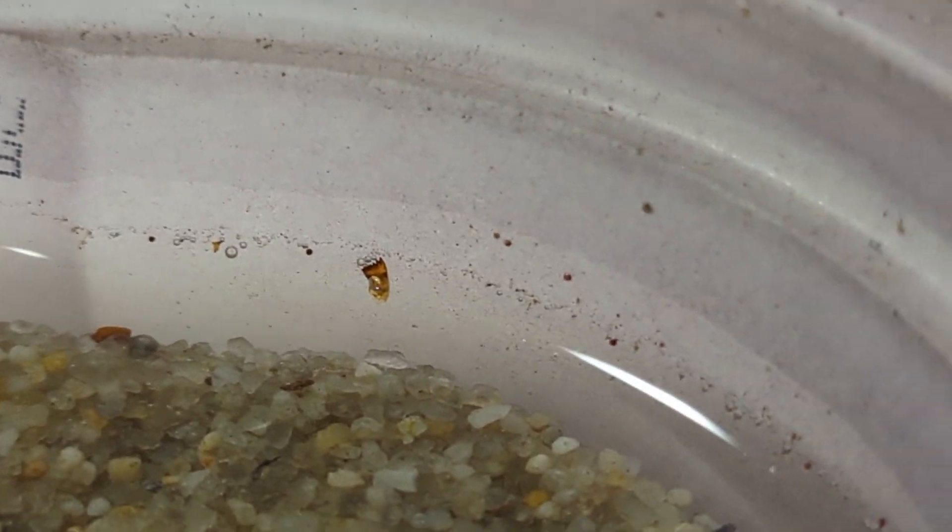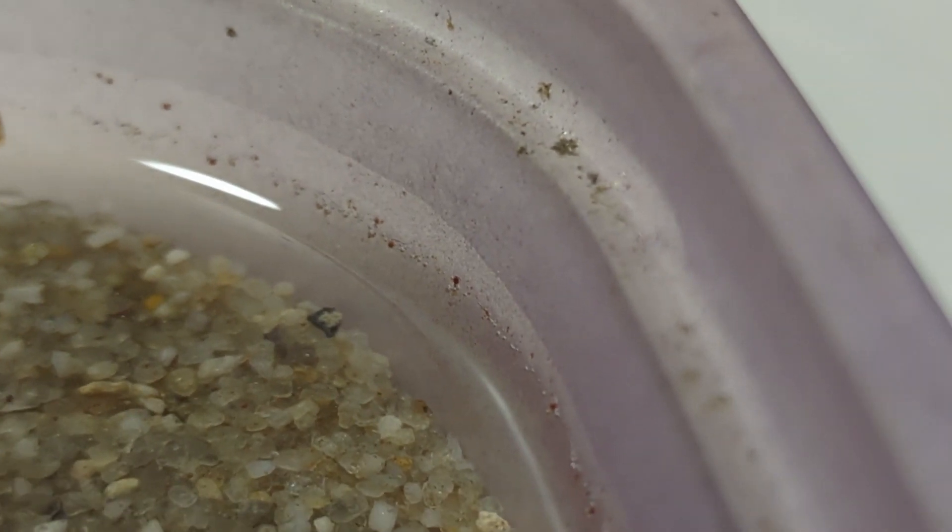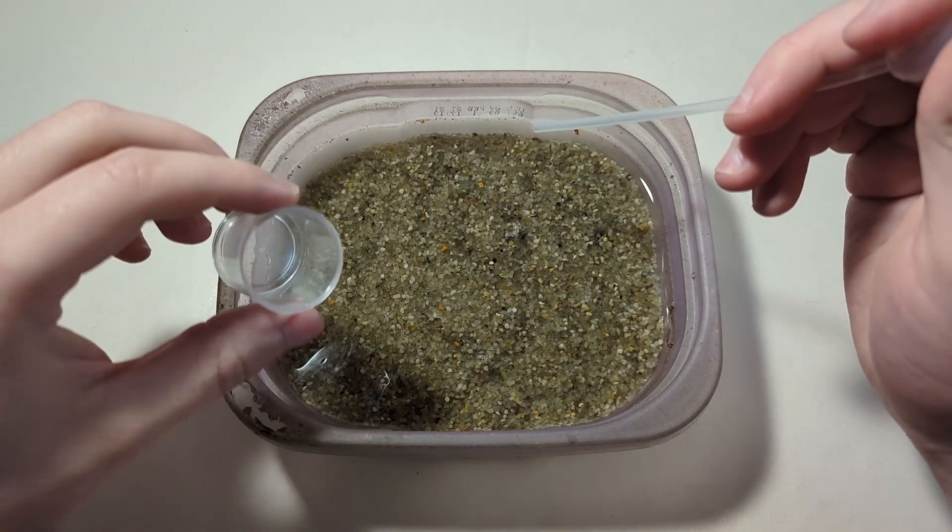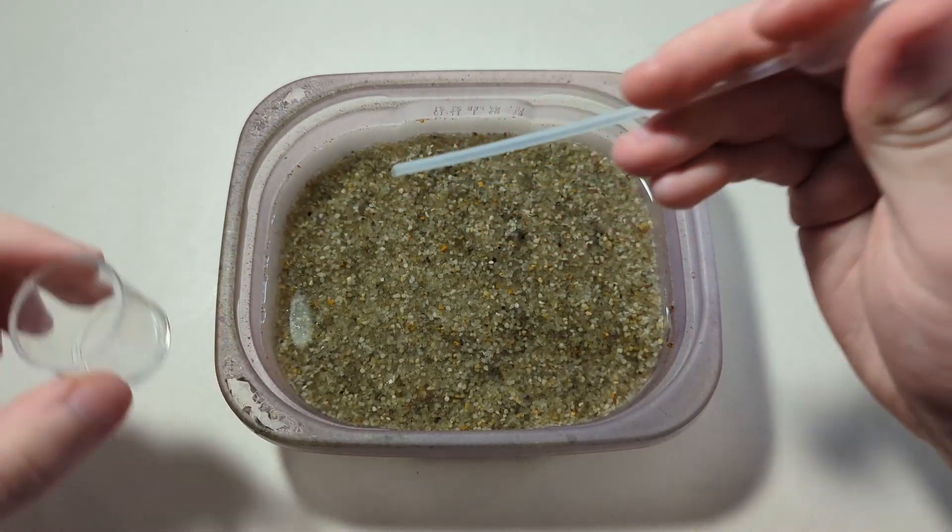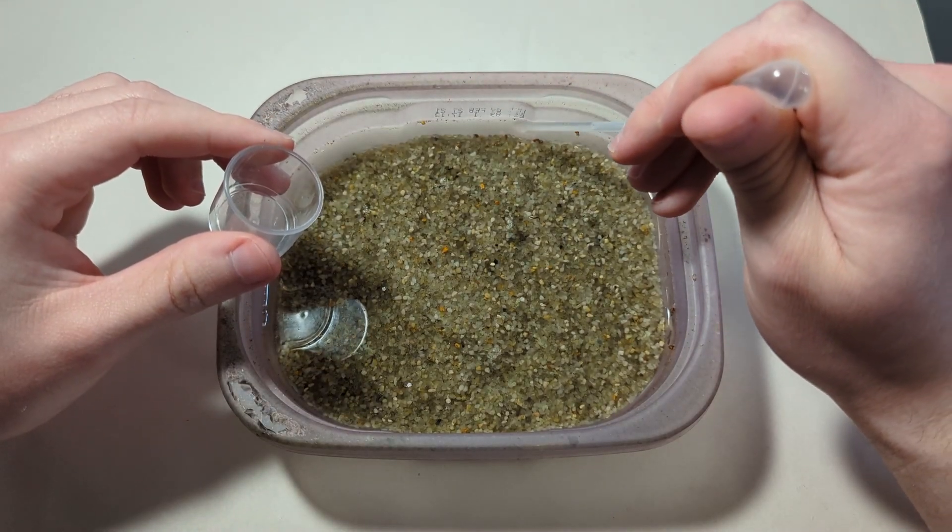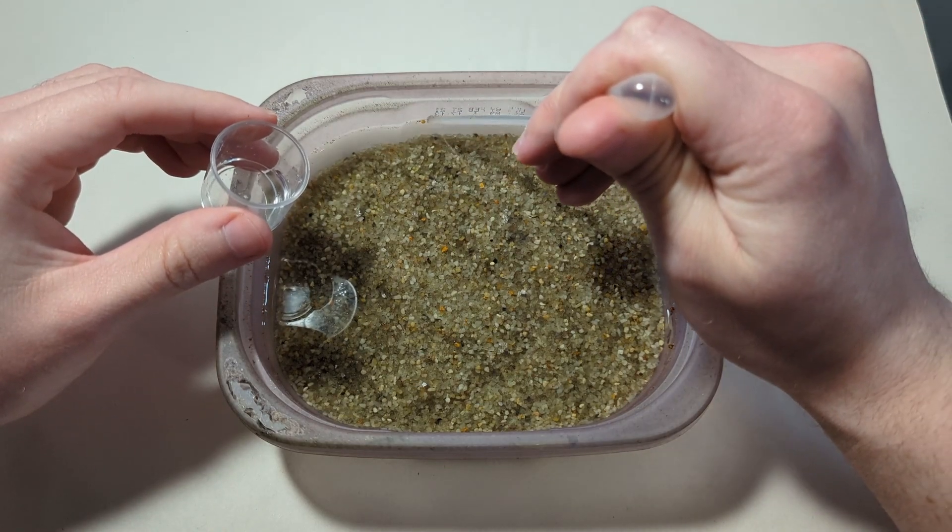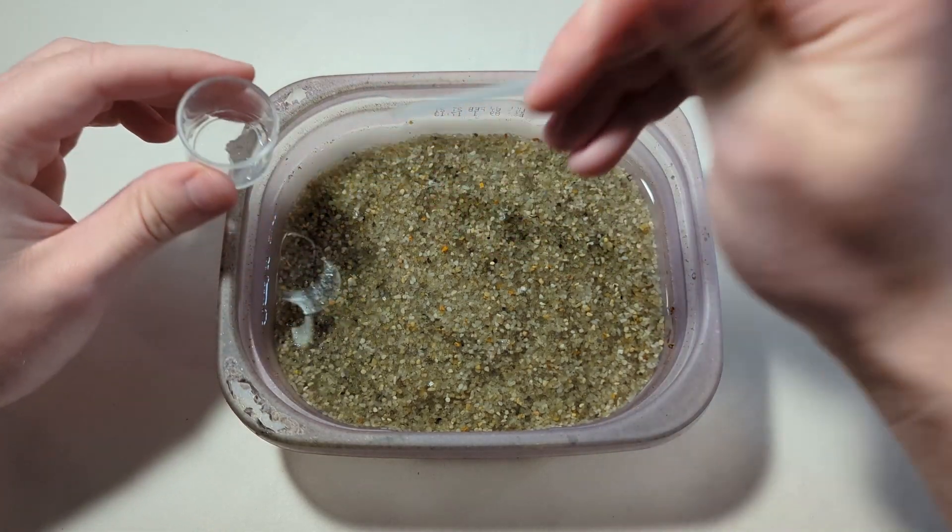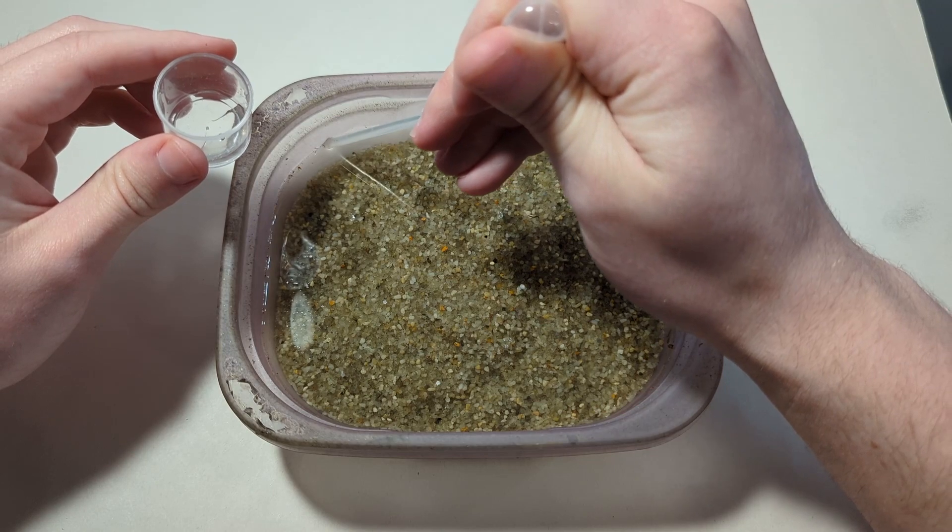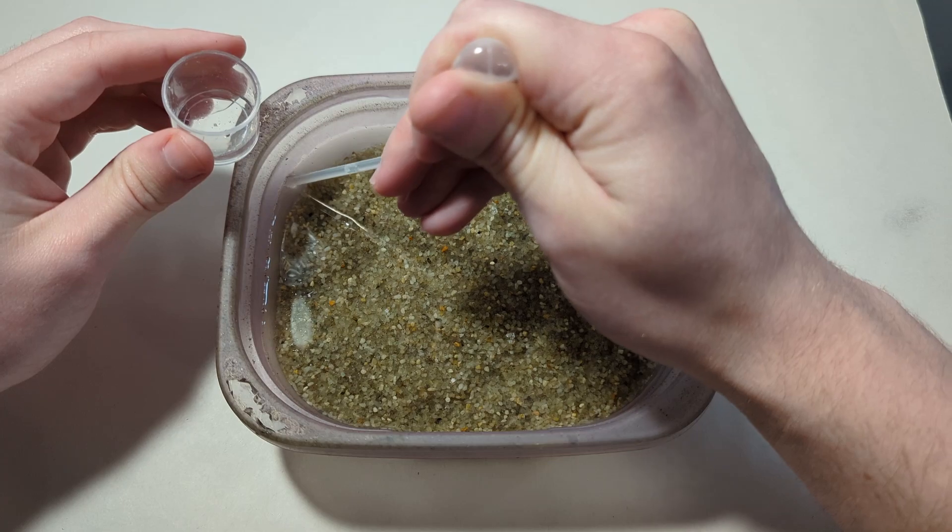So now you're going to want to grab your pipette and your smaller container. Basically we're just going to be sucking up the edges in the perimeter of this container and then squirting it in the smaller container. It's actually kind of hard to get the eggs to go up the pipette because they kind of still want to stick to the side, but just do your best. It takes a couple minutes.